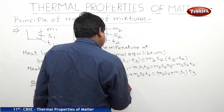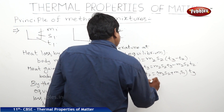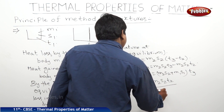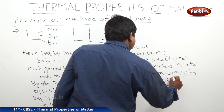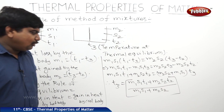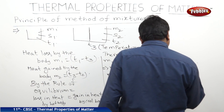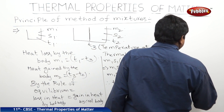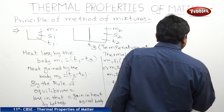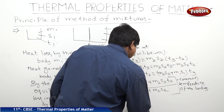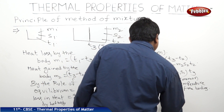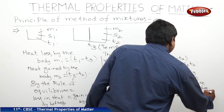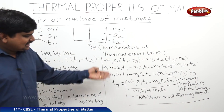Therefore, T3 is equal to (M1·S1·T1 + M2·S2·T2) / (M1·S1 + M2·S2). This is the common temperature of the bodies which are made thermally in contact. There are some special cases in this equation.